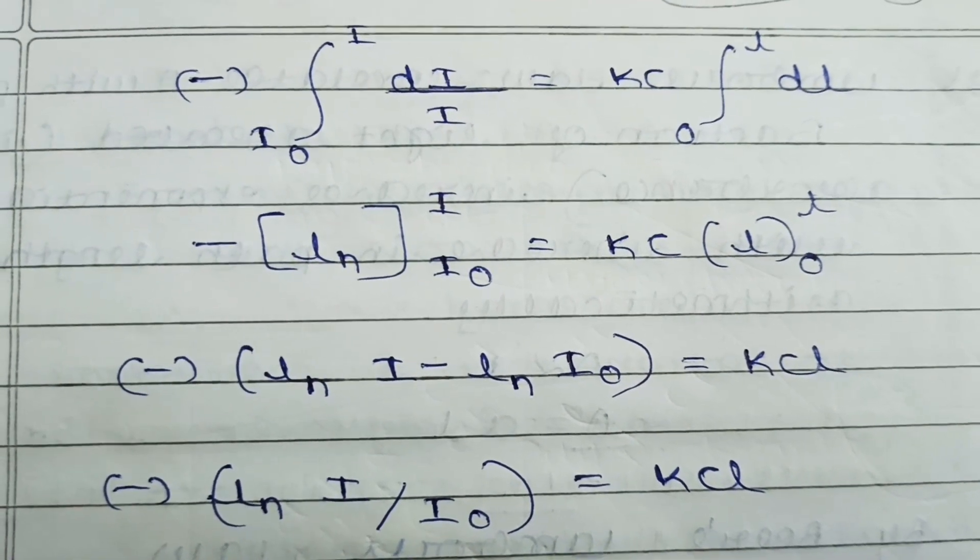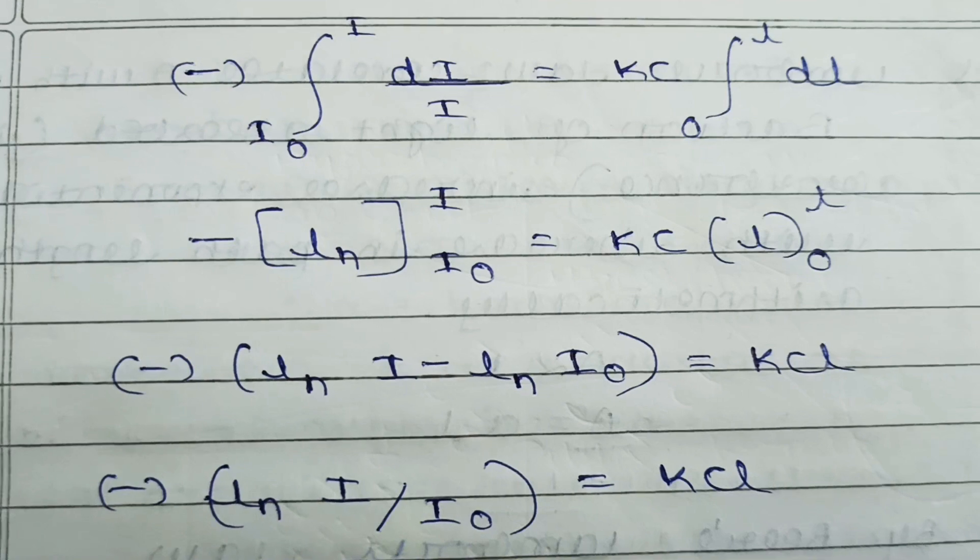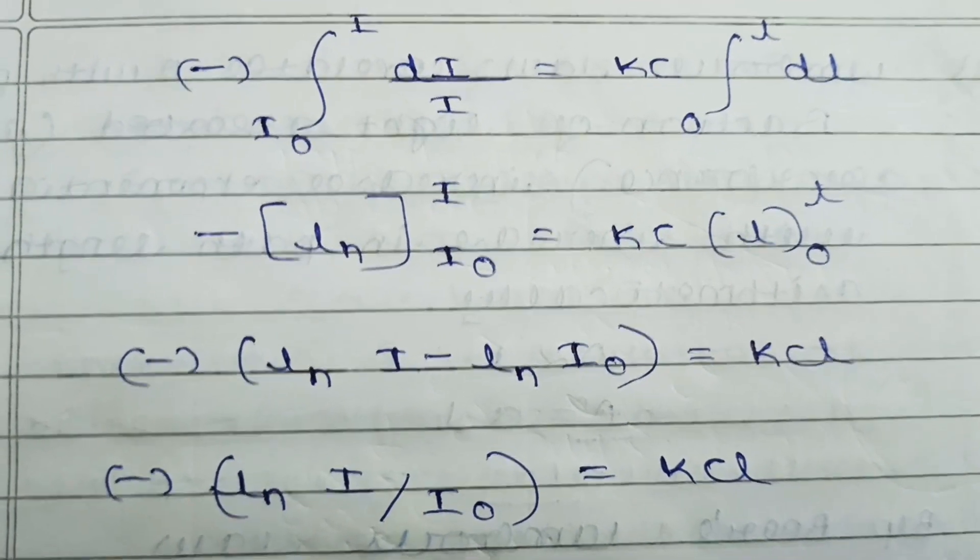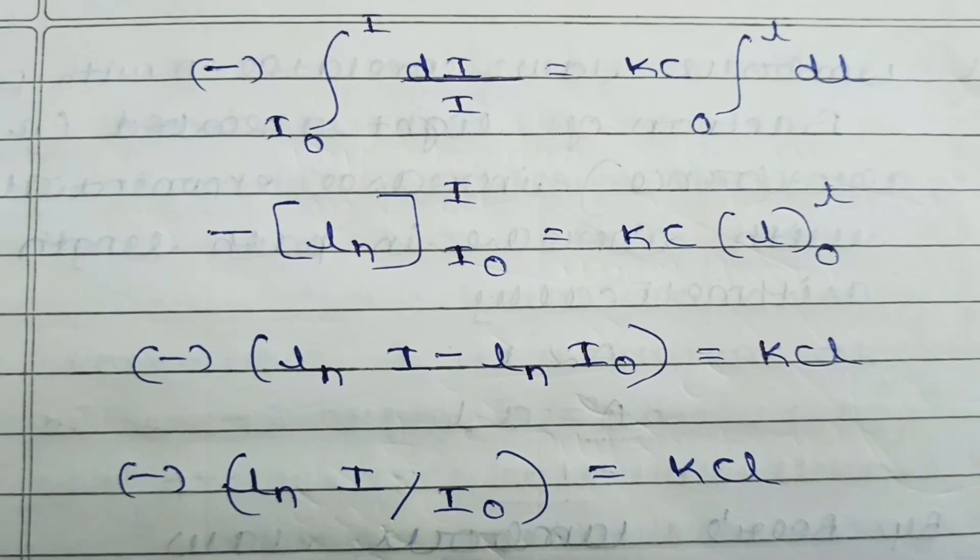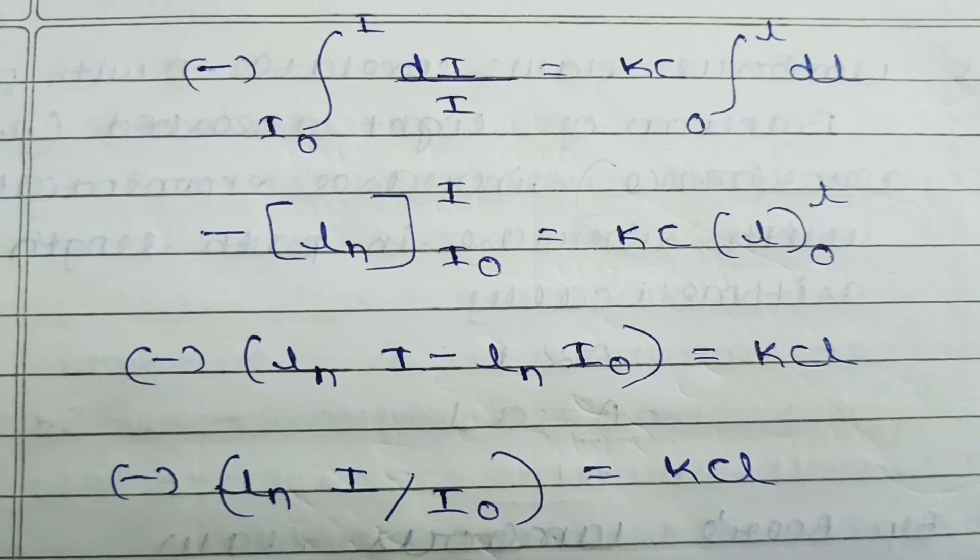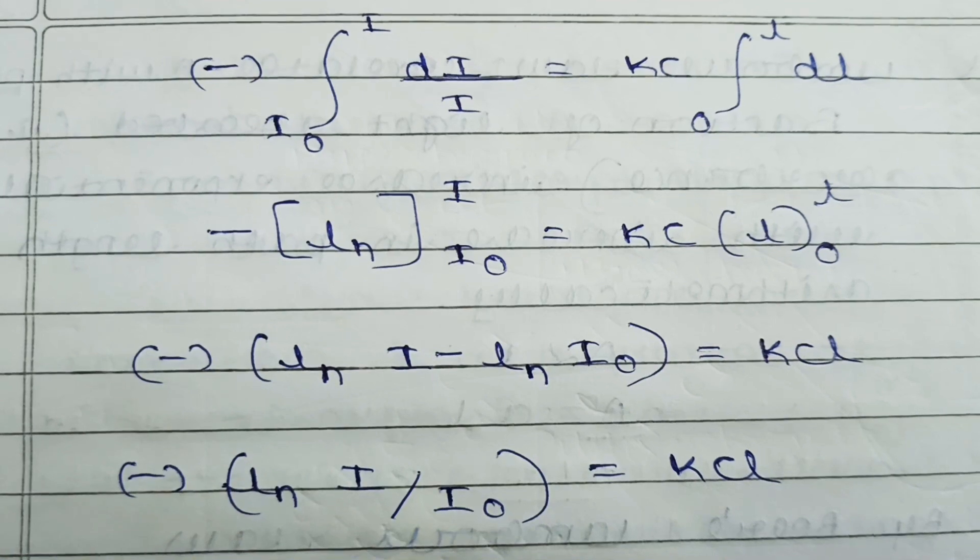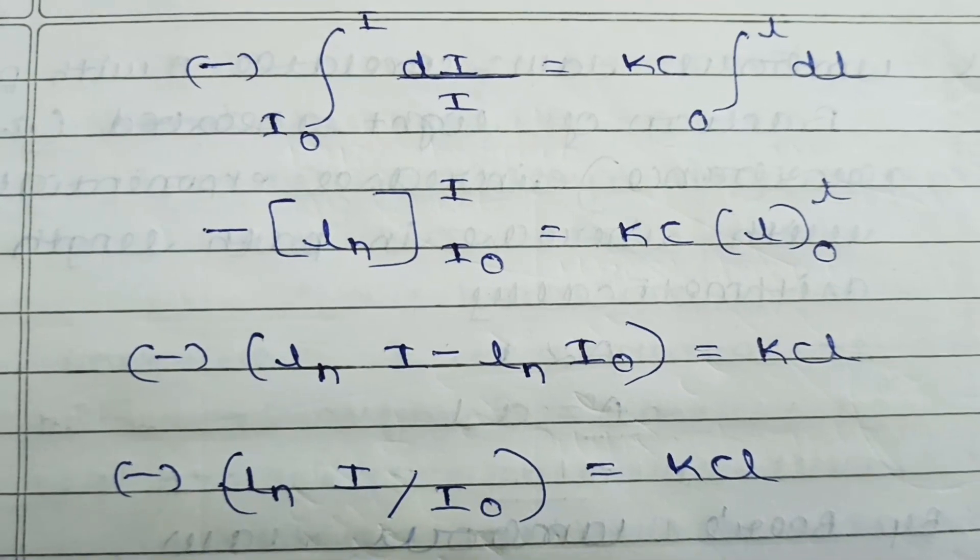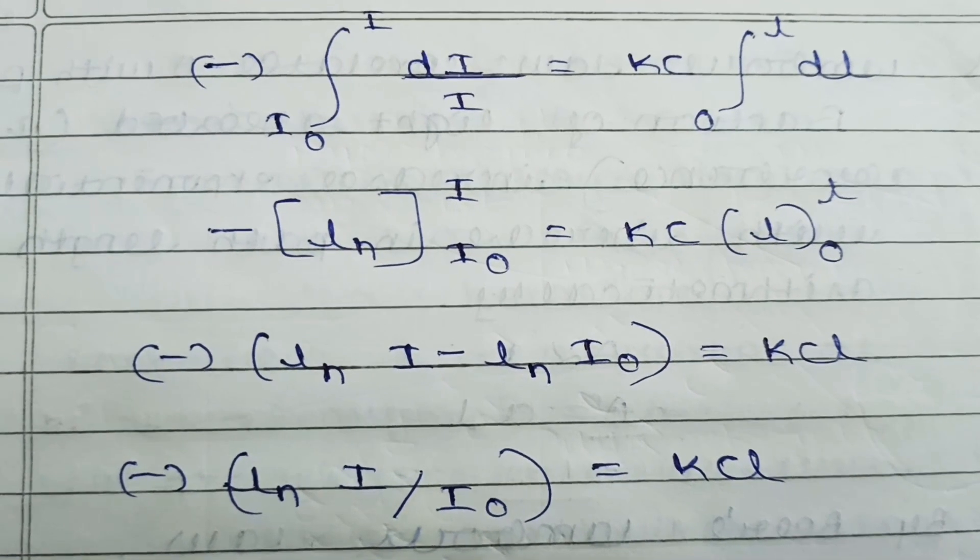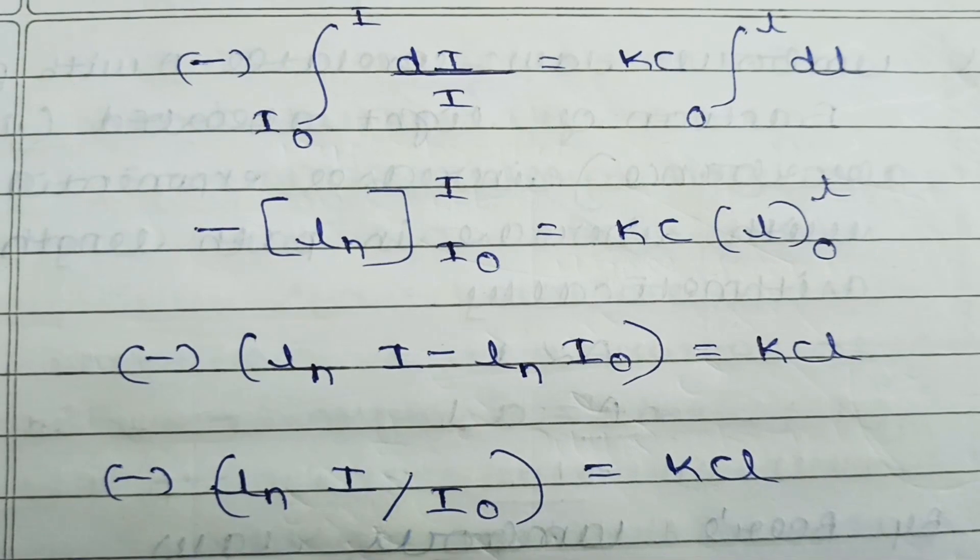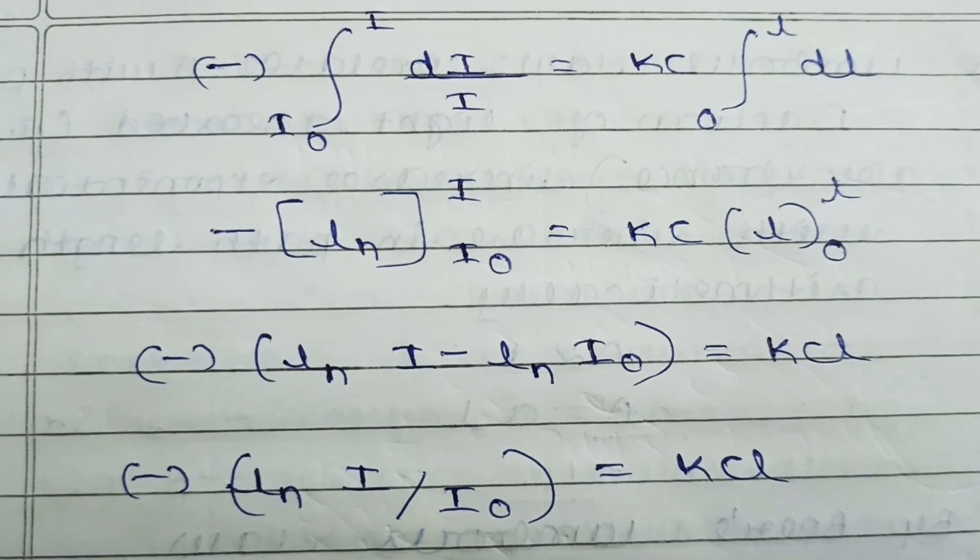In the third step, negative sign outside. Upper limit minus lower limit—that rule applies. Ln upper limit minus Ln lower limit. Ln upper limit means Ln I₀ equals K times C times L.